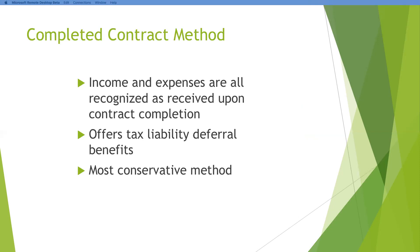In the completed contract method, we are recording our income and expenses as being received when the contract is complete. That doesn't mean you're not sending billings out to the client, and it certainly doesn't mean you're not receiving vendor bills. All along the way, as you're doing that long-term contract, you're going to have to be ordering materials and paying laborers. But you're recording it on the balance sheet in the completed contract method, and at the end you're moving it all.